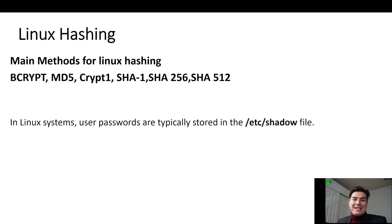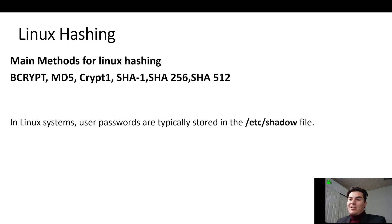Now, Linux hashing — the main methods would be bcrypt, which is salting and hashing, MD5, crypt, SHA1, SHA256, and SHA512. So Linux hashing covers bcrypt and all the SHA types.